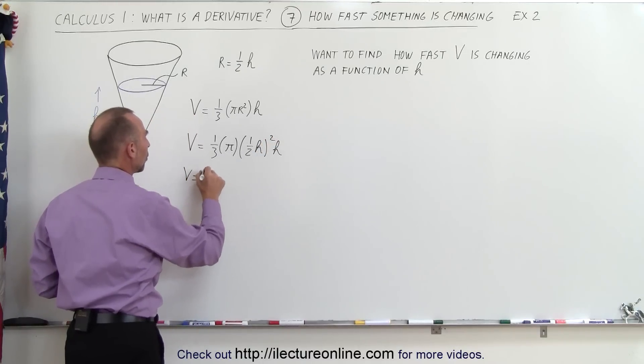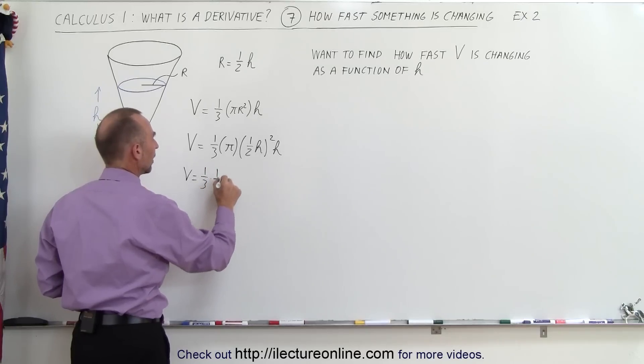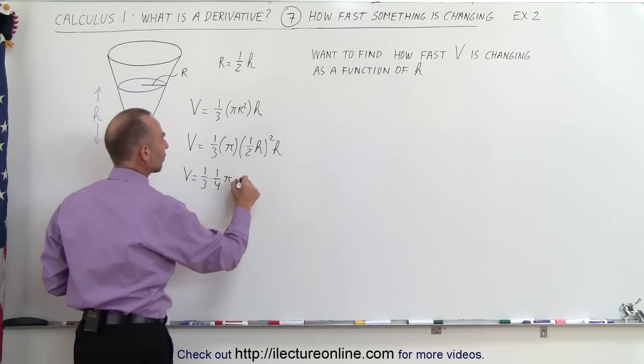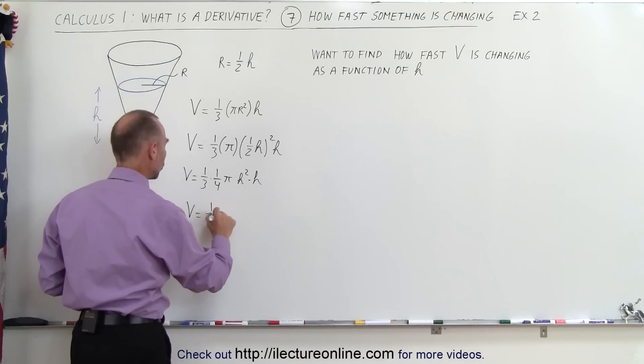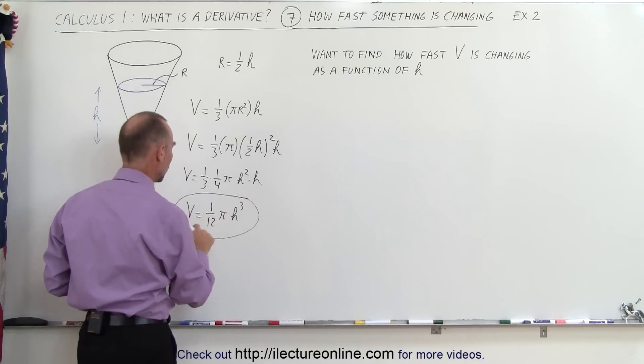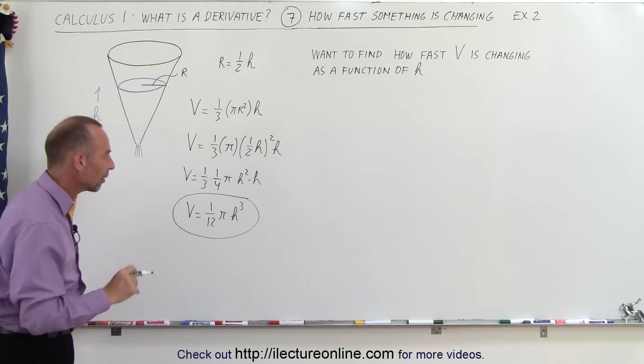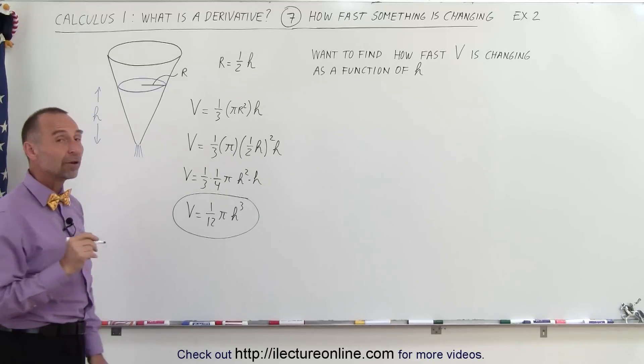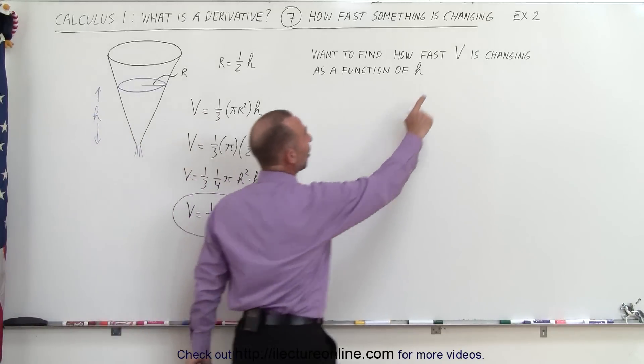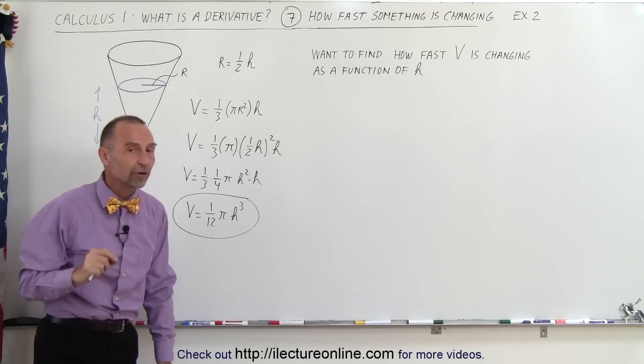So that would be V is equal to one-third times one-half squared, which is one-fourth, times π times h² times h. So finally, V is equal to one-twelfth πh³. Now we have a relationship between the volume and h only, r is no longer part of the equation. So now we want to find out how fast the volume is changing with respect to h as a function of h.